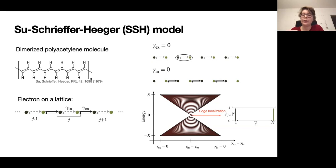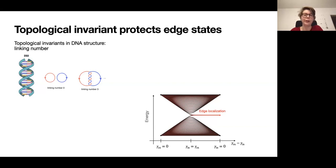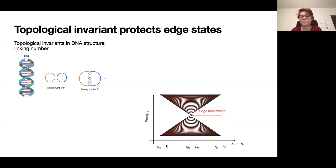These edge-localized states are a consequence of the internal structure of system eigenmodes characterized by topological invariants. A useful analogy from biophysics is the linking number in DNA: as you move along one strand, you count how many times it links with the other strand — this number is always an integer and cannot change without cutting the DNA. Similarly, we can construct an invariant characterizing the internal structure of eigenmodes in the SSH model.